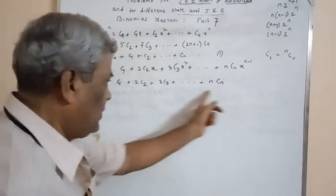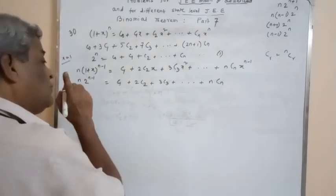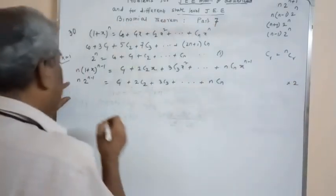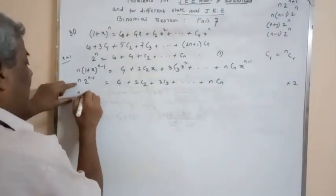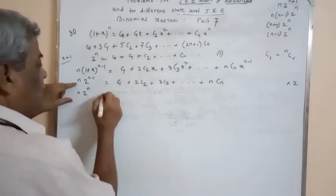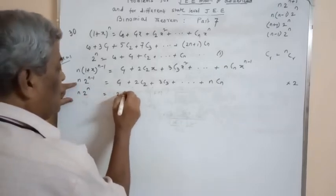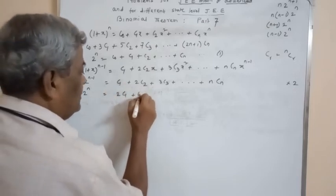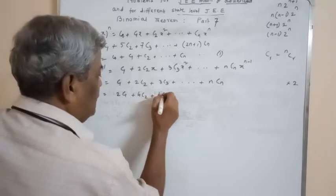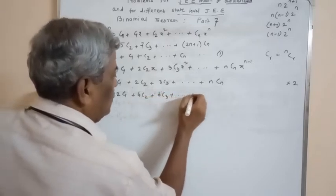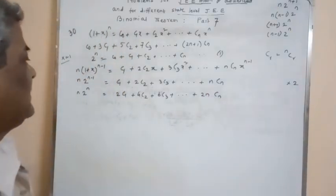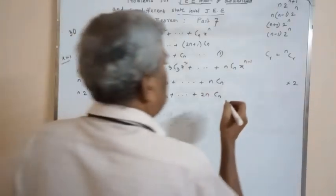Now multiply this throughout by 2. The result becomes n·2^n = 2c1 + 4c2 + 6c3 + ... + 2n·cn. Let this be equation 2.